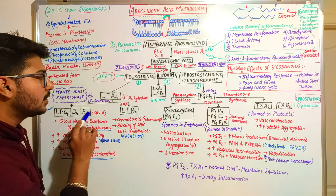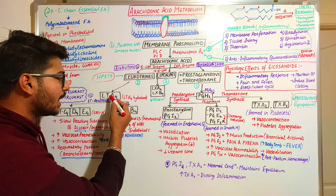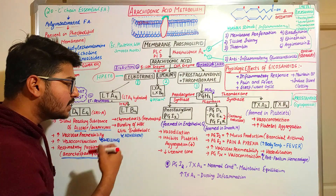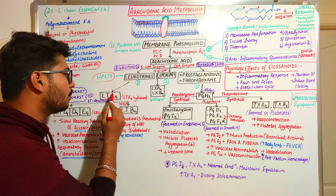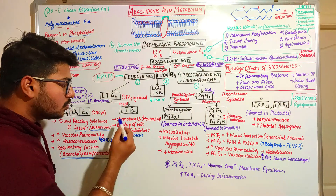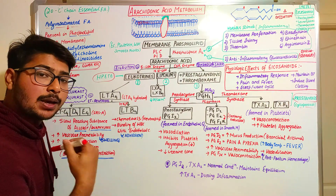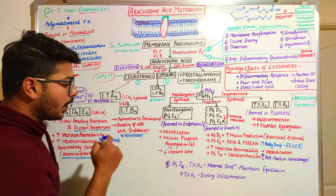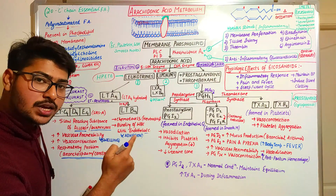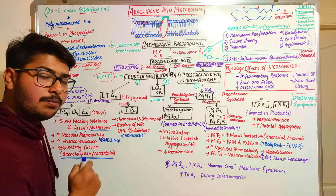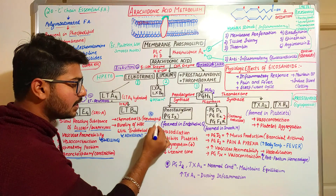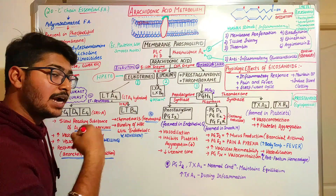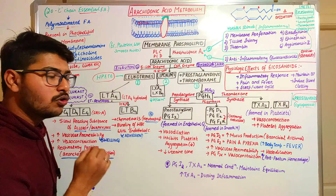When LTA4 comes in contact with water, it forms leukotriene B4. Leukotriene B4 has a chemotactic effect and promotes binding of white blood cells with endothelial cells. An important question: which leukocyte is most attracted to the site of inflammation? The answer is neutrophils — they have maximum attraction to the inflammation site, induced by the chemotactic effect of leukotriene B4.